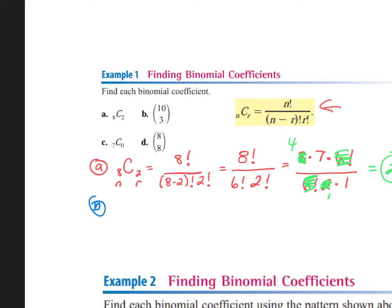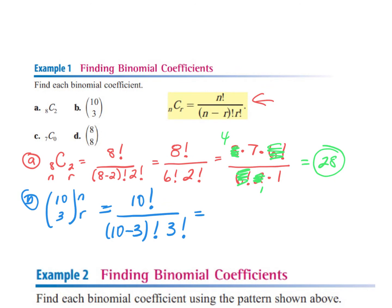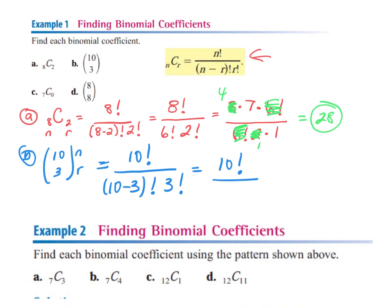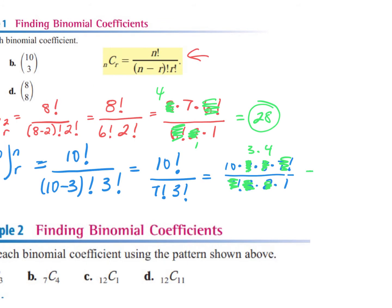Let's look at B. It's written with 10 on top of 3, so N is 10 and R is 3. I have 10 factorial over 10 minus 3 factorial times 3 factorial, which simplifies to 10 factorial over 7 factorial times 3 factorial. On top: 10 times 9 times 8, stopping at 7 because there's 7 factorial on the bottom. Then 3 times 2 times 1. The 7 factorials cancel. 3 goes into 9 three times, 2 goes into 8 four times. So 10 times 3 times 4 is 120.